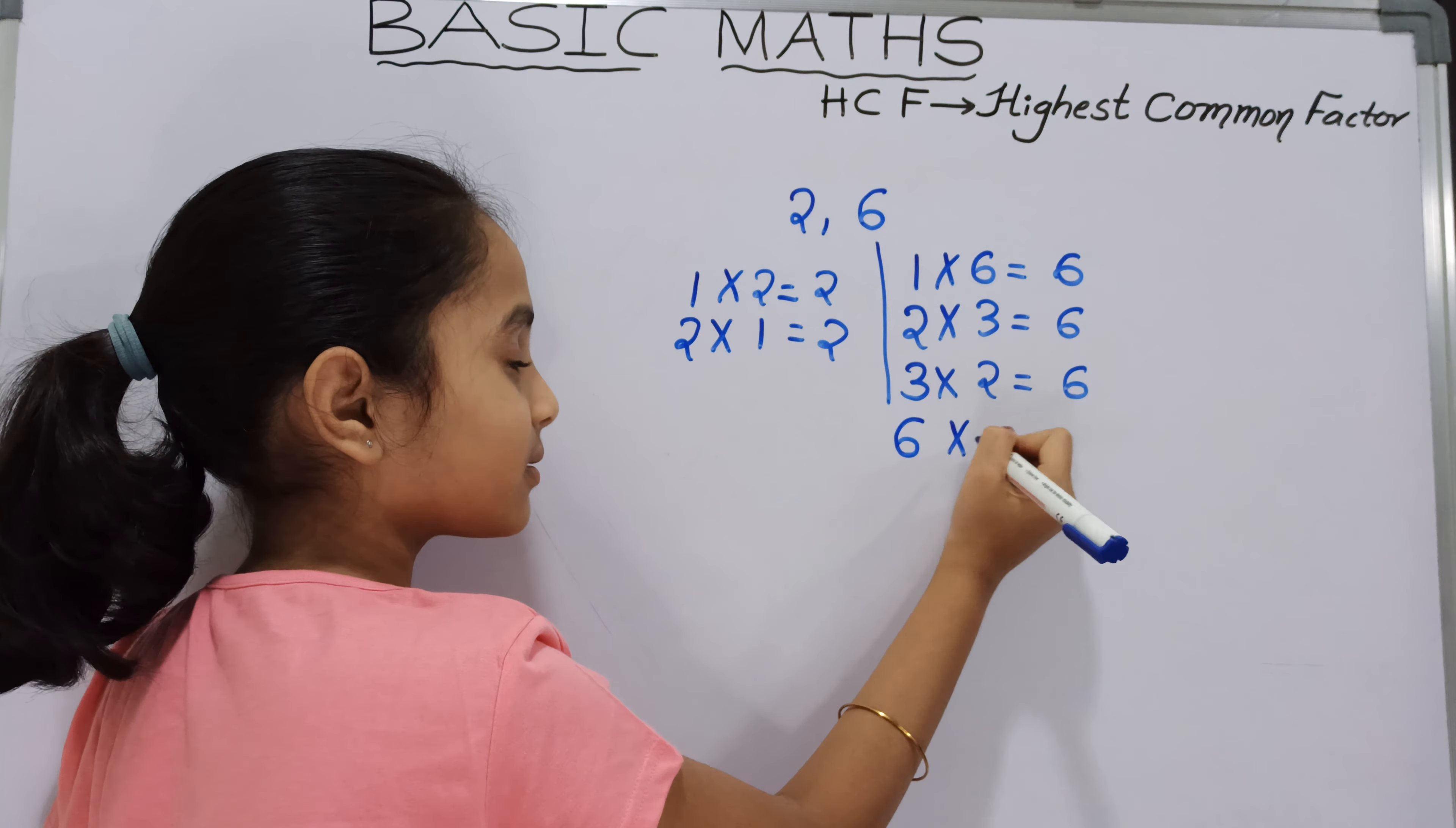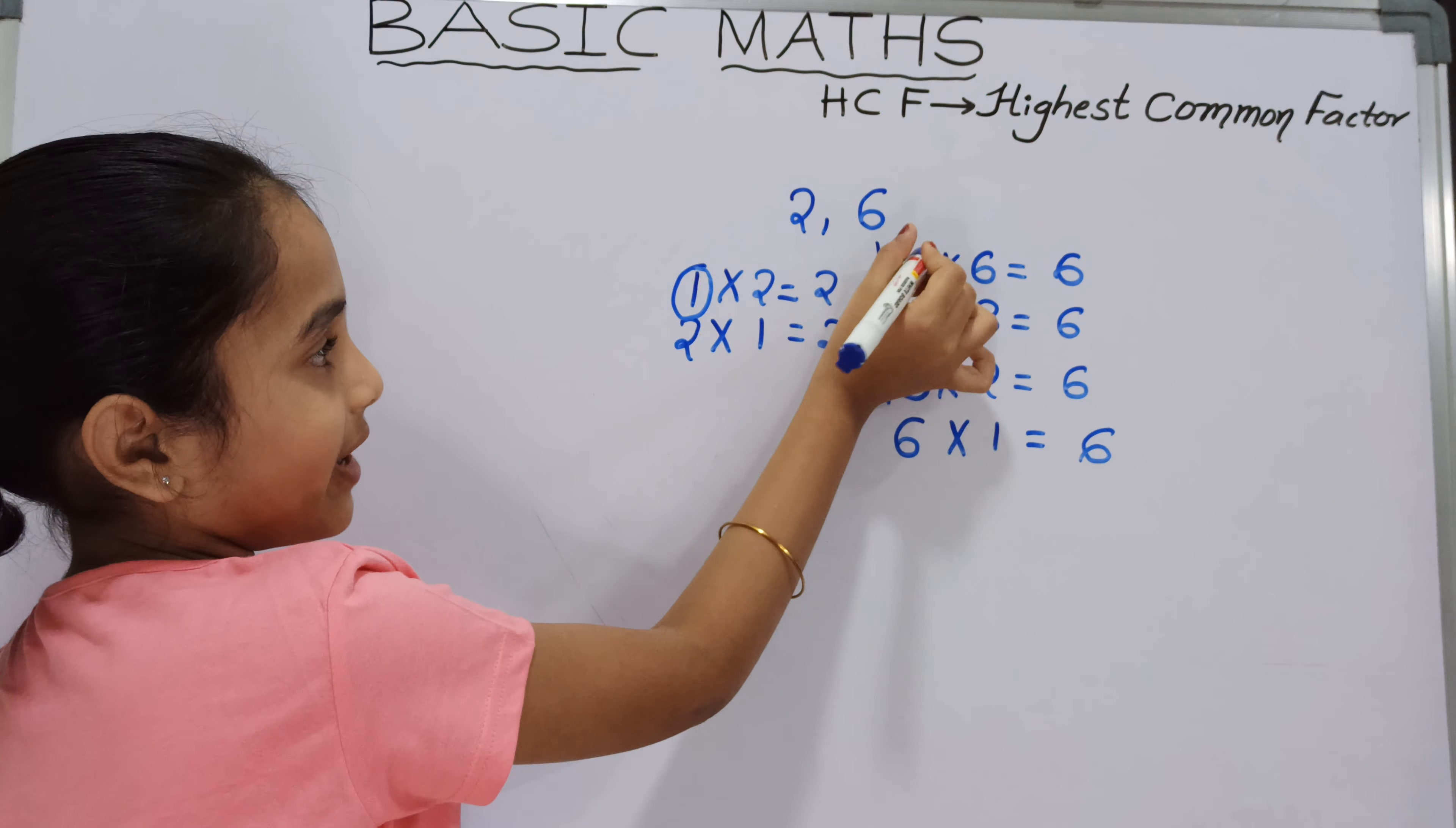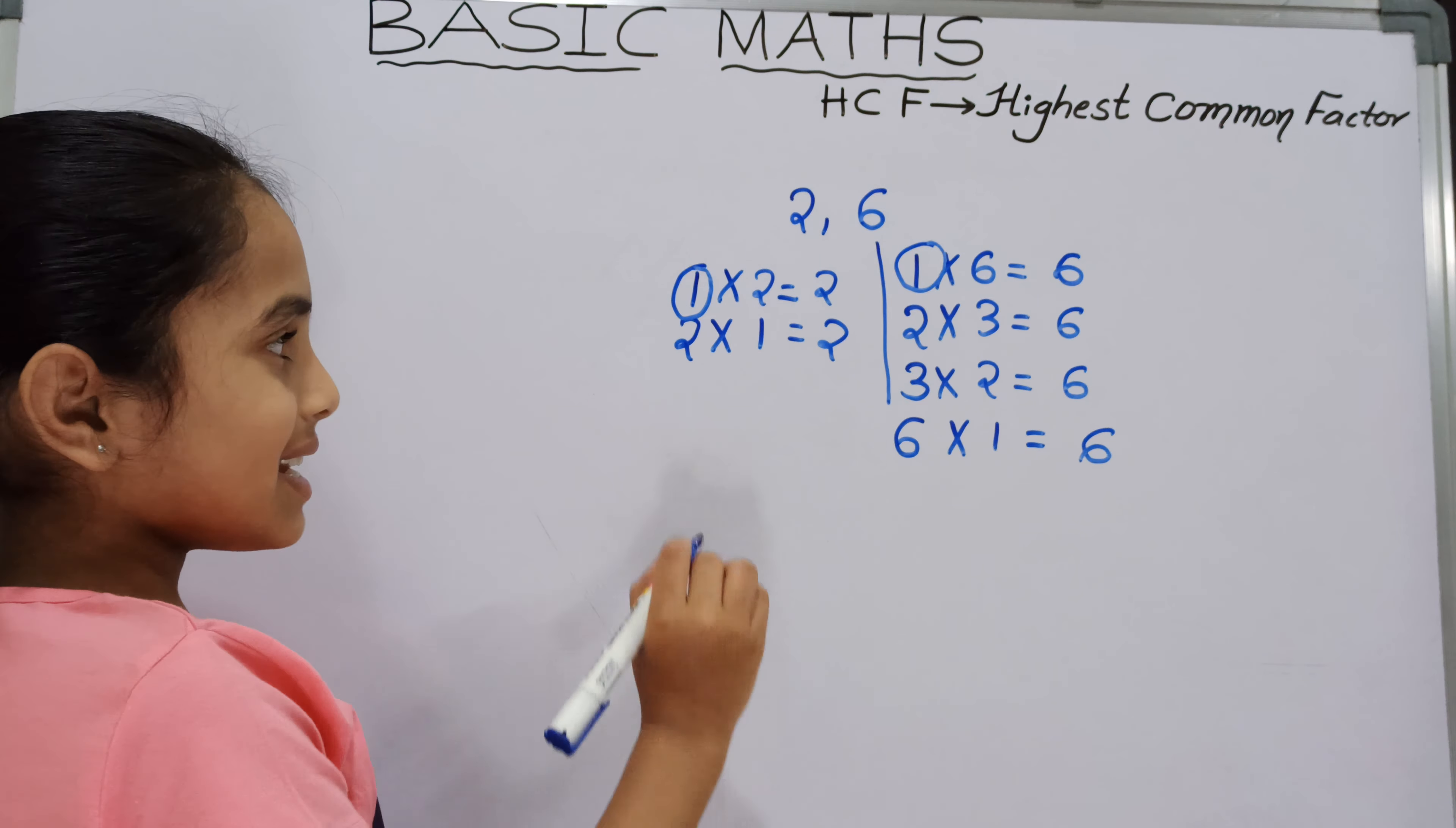So now we should write the factors. 1 will be common in any number. Next, what are the common factors?